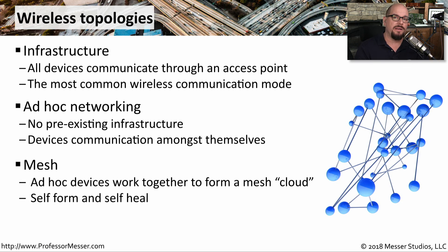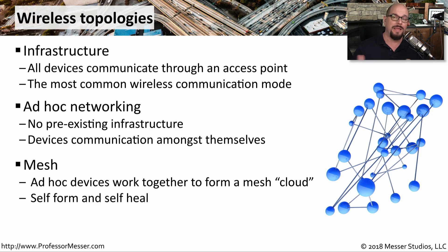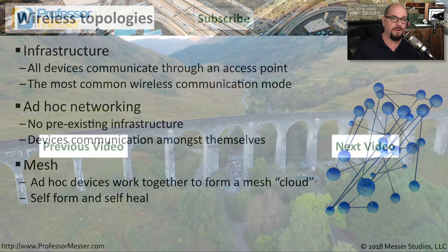Today's Internet of Things wireless networks often use mesh networking. These are individual devices that are able to discover each other and use each other as a large cloud of devices. This allows them not only to self-form into this mesh cloud, but they can also self-heal. If a device is disabled, they can simply use the large number of devices to route around the problem and enable communication using a different path.